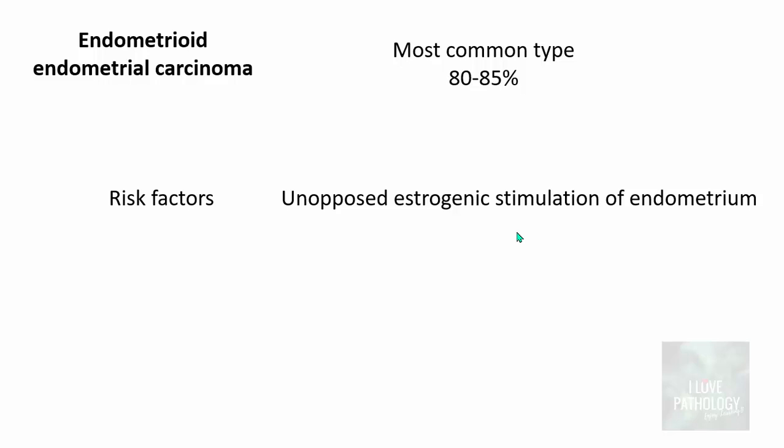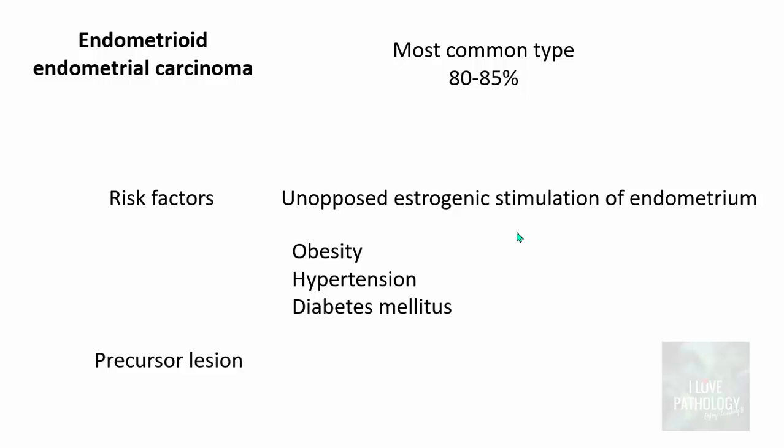Additional risk factors include nulliparous women, who have more exposure to oestrogen levels; extraneous oestrogen supplements or hormonal pills; and any ovarian tumors which can increase oestrogen production, such as granulosa cell tumors. Other associated factors are obesity, hypertension, and diabetes. The precursor lesion for endometrioid carcinoma is endometrial hyperplasia — particularly the atypical type of endometrial hyperplasia.